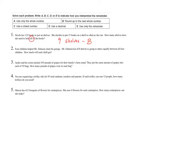Problem 2 says four children helped Mr. Johnson clean his garage. Mr. Johnson has $18 that he's going to share equally between all four children. How much will each child get? Our key word here is 'equally,' which means we want an exact answer. So I only have two strategies that will give me an exact answer — C or D — both of which indicate that my remainder is going to be present in my answer, either as a fraction or as a decimal.